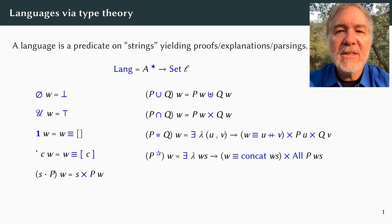For instance, a string is in the union of P and Q when it is in P or in Q, so memberships are sum types corresponding to logical disjunction. Likewise, membership proofs for language intersections are product types corresponding to logical conjunction.